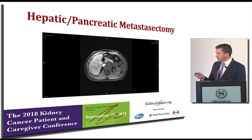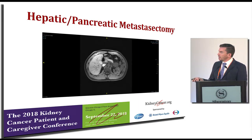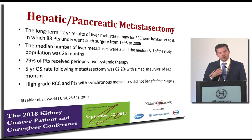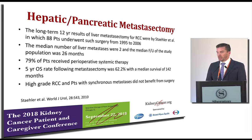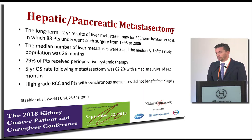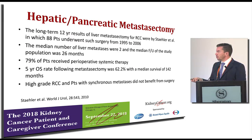How about hepatic and pancreatic metastasectomy? This CT scan shows a pancreas metastasis that a patient developed after having the right kidney removed previously. A 12-year follow-up study — a paper published from the Mayo Clinic over about 11 years — looked at liver metastasis. The median number of liver metastases was two, and the median follow-up was about 26 months. Most patients had received some form of systemic treatment in addition to surgery. The 5-year survival rate was about 60%, and some patients survived up to 142 months.